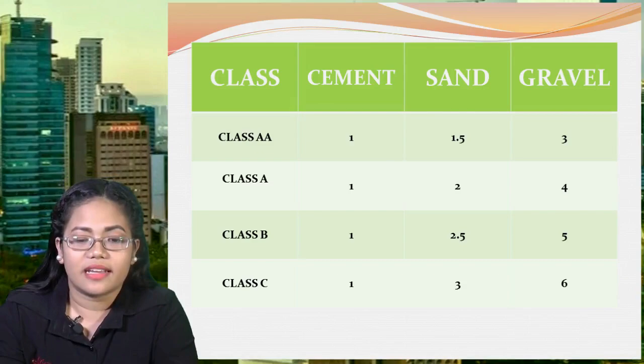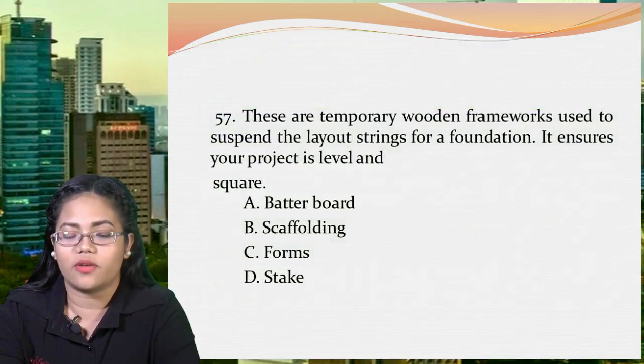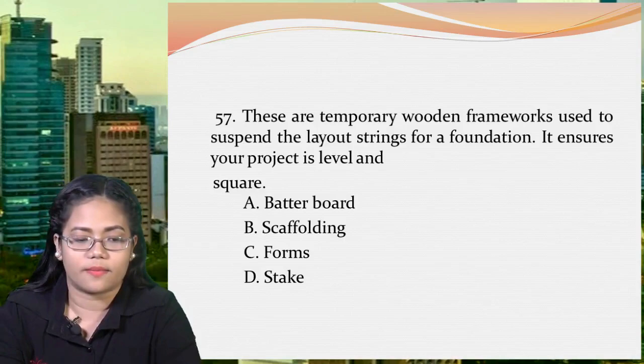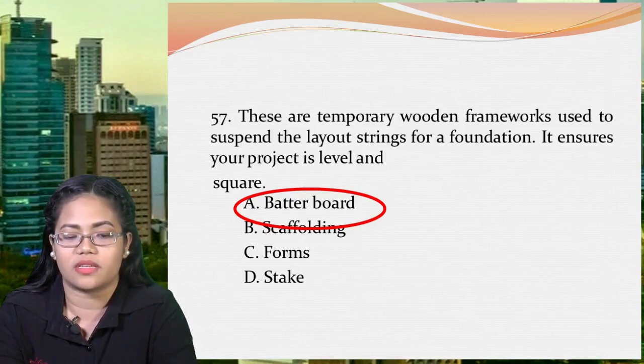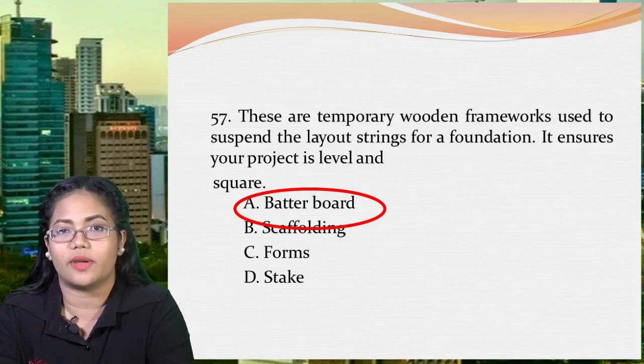Next question: these are temporary wooden frameworks used to suspend the layout strings for a foundation. They ensure your project is level and square. A: butterboard, B: scaffolding, C: forms, or D: stake. The correct answer is letter A, butterboard, because it is usually composed of 2 stakes and a horizontal crosspiece. If properly installed, butterboards help ensure the corners of the foundation are at exactly the right angles and location.